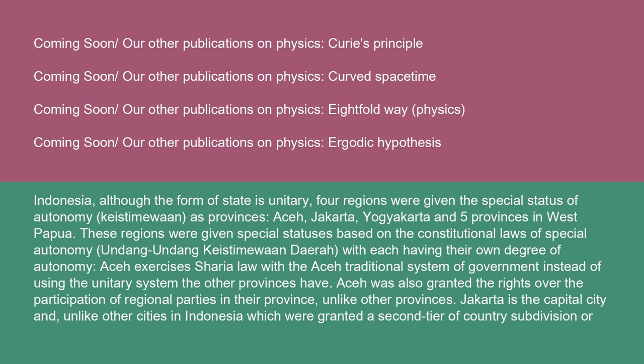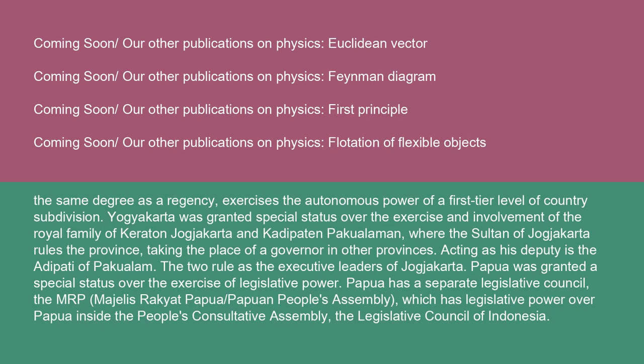Jakarta is the capital city, and unlike other cities in Indonesia which were granted a second tier of country subdivision or the same degree as a regency, it exercises the autonomous power of a first-tier level of country subdivision. Yogyakarta was granted special status over the exercise and involvement of the royal family of Keraton Yogyakarta and Kadipaten Pakualaman, where the sultan of Yogyakarta rules the province, taking the place of a governor in other provinces. Acting as his deputy is the Adipati of Pakualaman. The two rule as the executive leaders of Yogyakarta.